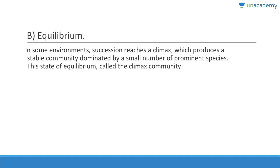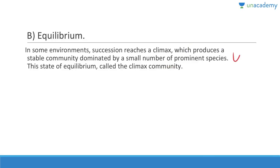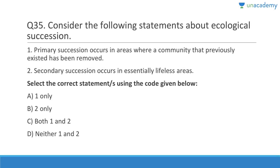Question 34: A climax community is in a state of equilibrium with the environment. Succession will reach a climax where organisms live in harmony with each other, producing a stable community dominated by a small number of prominent species. This state of equilibrium is called the climax community.